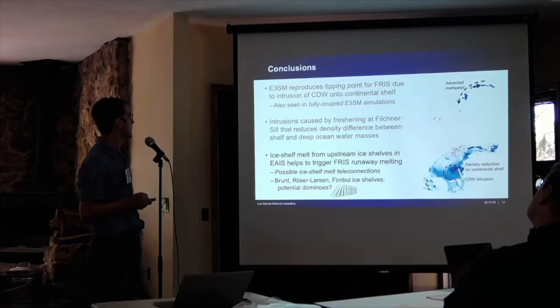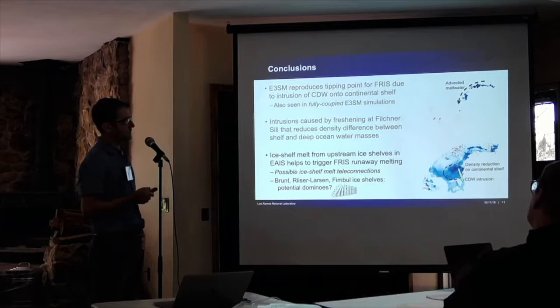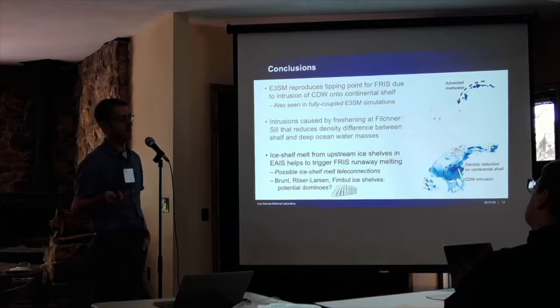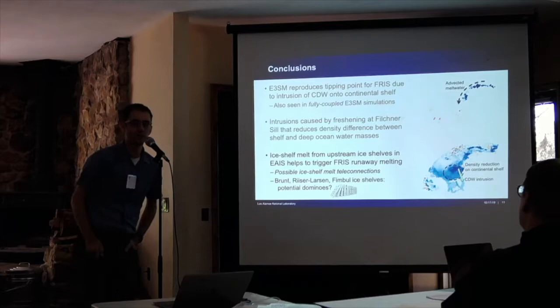To summarize: we see the potential for ice shelf melt teleconnections between neighboring ice shelves. Smaller and simpler ice shelves could be potential dominoes in a domino effect that could lead to very large changes in the Filchner-Ronne system. This is significant because those smaller shelves have limited impact on ice sheet mass balance individually, but changing Filchner-Ronne could obviously have a huge impact.